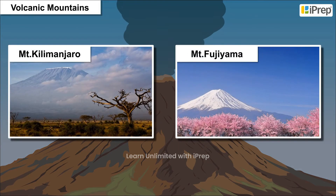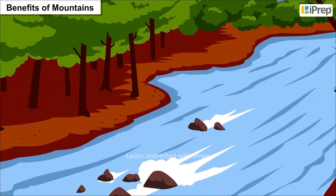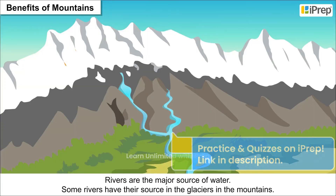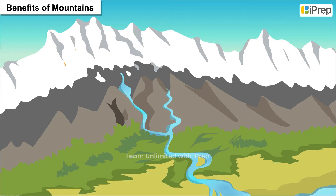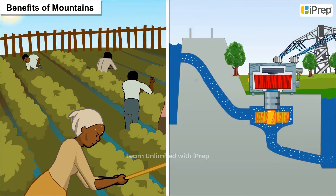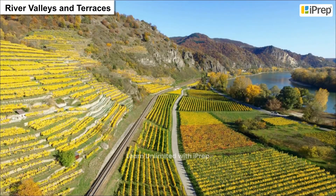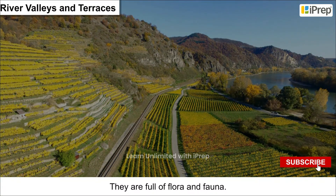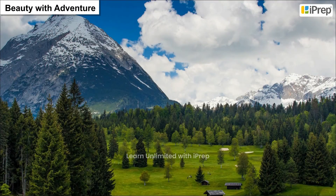Benefits of mountains: rivers are a major source of water. Some rivers have their source in the glaciers in the mountains. This water is used for irrigation and production of hydroelectricity. The river valleys and terraces are best for cultivation purposes.